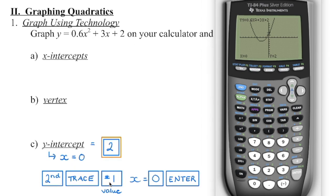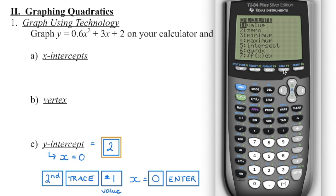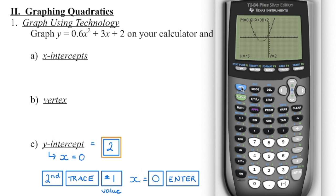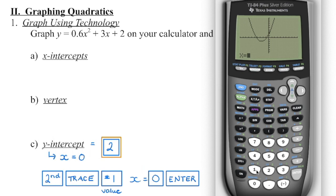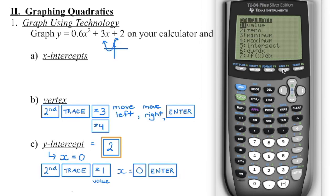We can also use these same keystrokes to find the value of any other coordinate point along this parabola. For example, going second function, trace — if we want to figure out the y-value when x is negative 5, we can see on our parabola that y has a value of positive 2. If we go second function, trace and try x equals 1, we can see y has a value of 5.6. In that same second function trace menu, we also have the option of minimum or maximum value, which gives us the vertex.